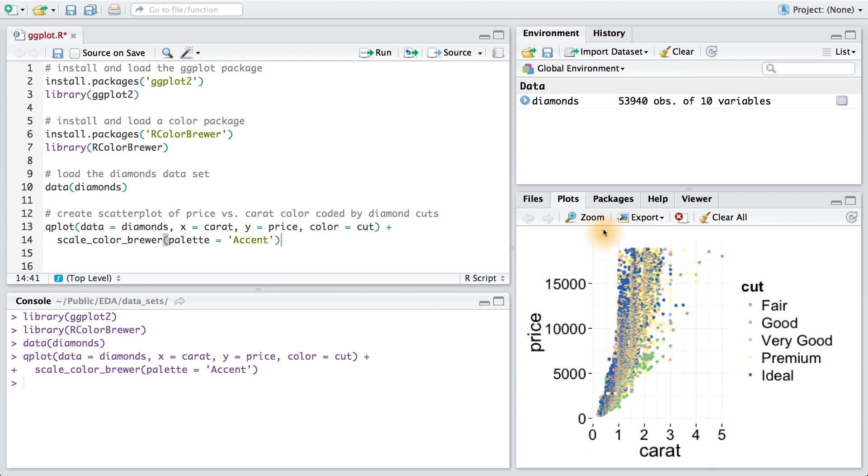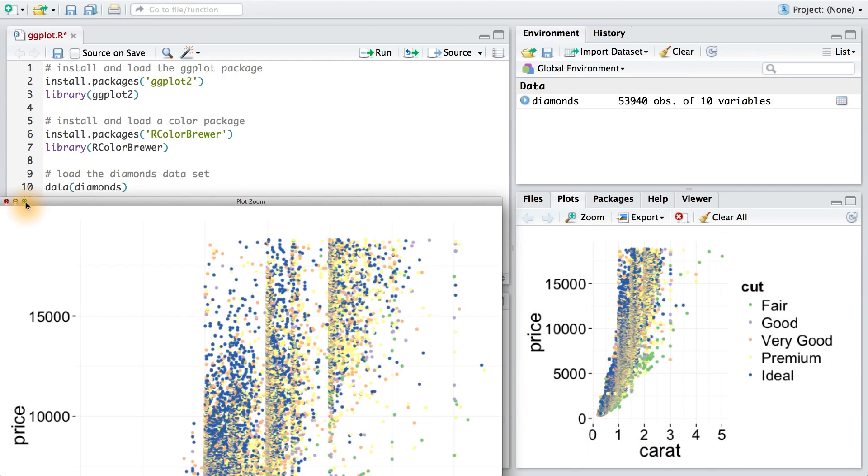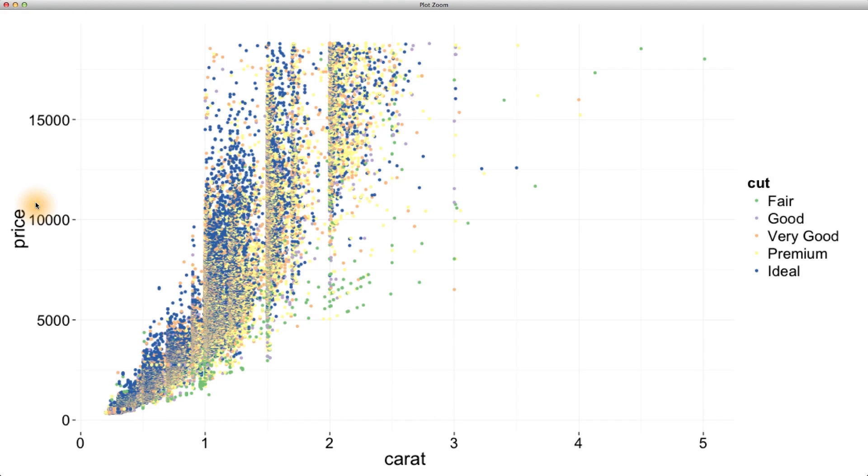Let's check out this plot in detail. This plot shows the relationship between price and carat of almost 54,000 round-cut diamonds. I'd say R is doing very well for such few lines of code.